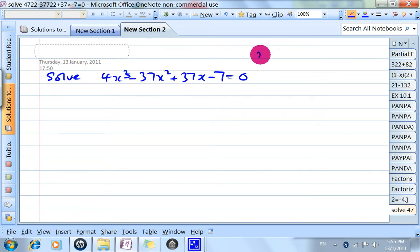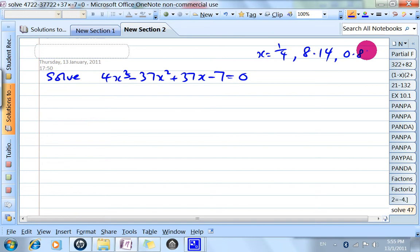When you use the calculator, it will tell you the answers are 0.25, which is 1/4, and 8.14 and 0.860 if you write it to 3 significant figures.